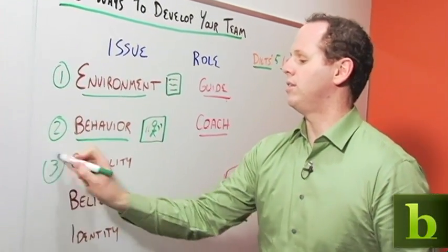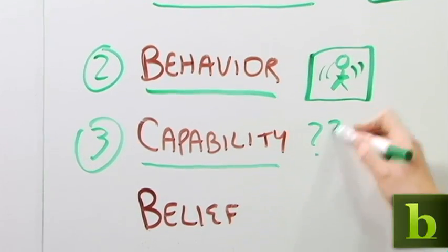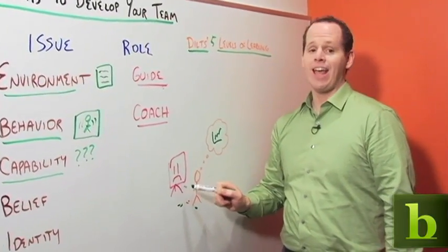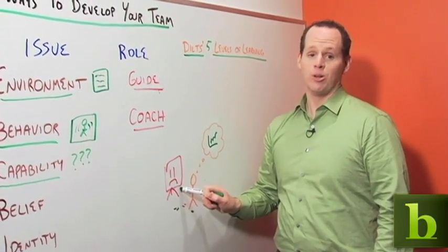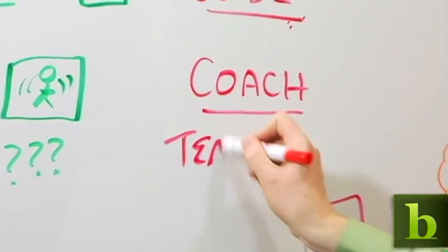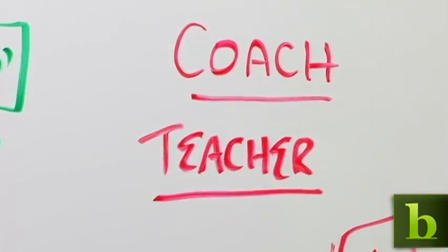The third level is the level of capability. Capability is about what the person actually knows. Let's say, for example, you watch this person give this presentation, and he made several misstatements about your company's product line. That's because he doesn't know those facts. In that case, your job is to play the role of a teacher. You need to teach him the facts he needs to know so he gets better at his job.